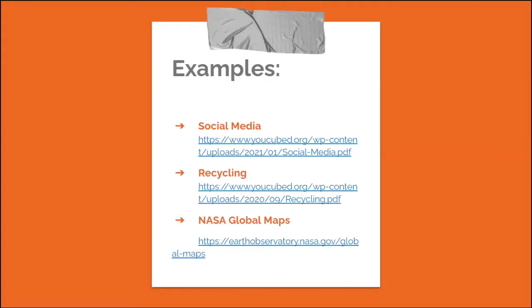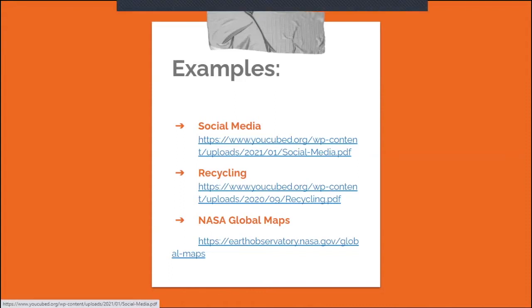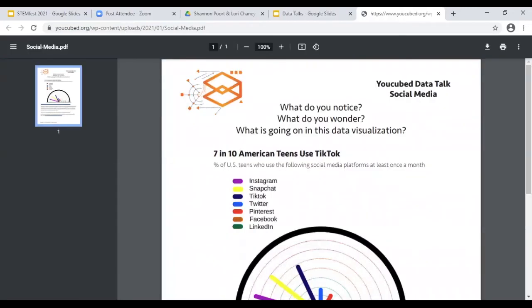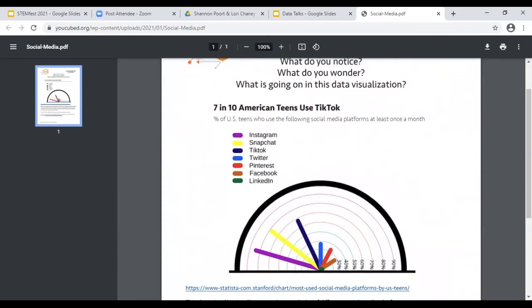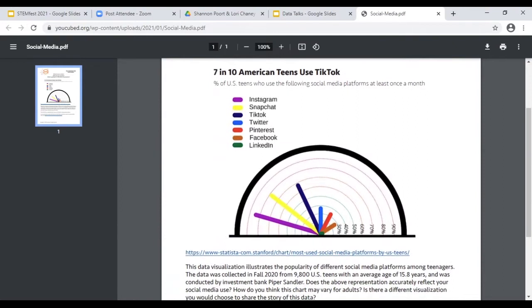Here are some examples of data we could use for a data talk. This is the one I chose to use in my classroom — I did this with my honors class. It's a topic they are very familiar with: social media. I just showed them the graph, put them into groups, and said, 'I just want you to look at this. Talk about what you notice, what you see, what stands out to you, what you like about this data representation.' As they were talking, I would pose another question to get them talking about a different aspect of it. They really liked this because it's something they can relate to very well.